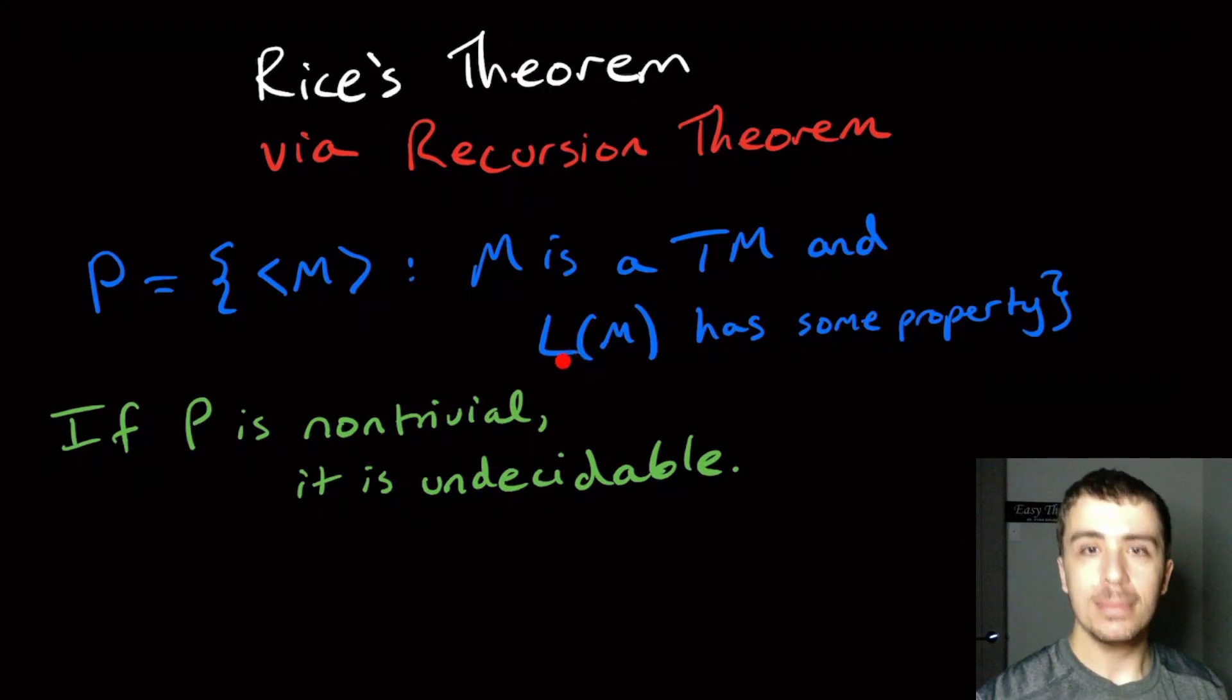If this set P is non-trivial, non-trivial means that there is some machine in P and there is some machine not in P, then Rice's theorem says that this is undecidable.